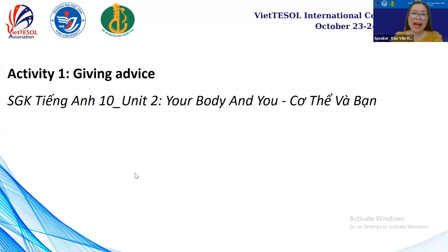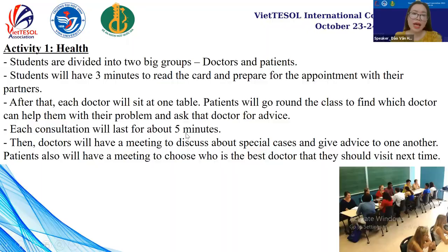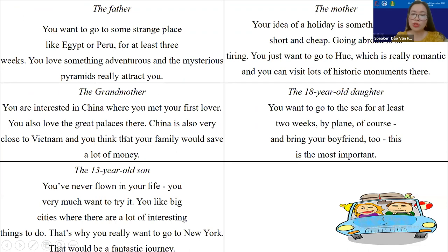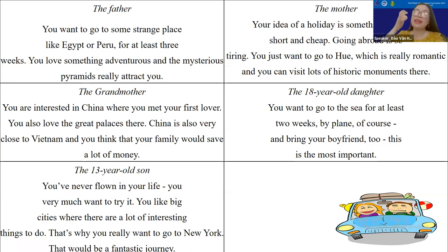These activities can be applied to high school students as well. For example, the first activity can be used for students in grade 10, in a unit about health. The second activity can be used for grade 11, unit eight. We can easily change the destination to suit the lessons or to suit our students, because students from different cities in Vietnam have different experiences and want to go to different places. It's good if we can understand our students and choose the place they really want to go, so that they have the motivation to speak and debate.